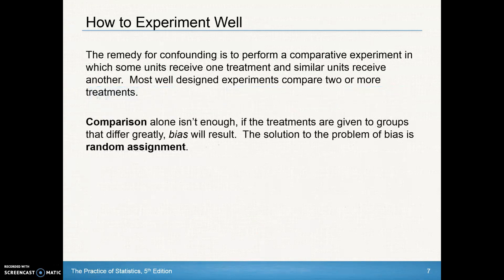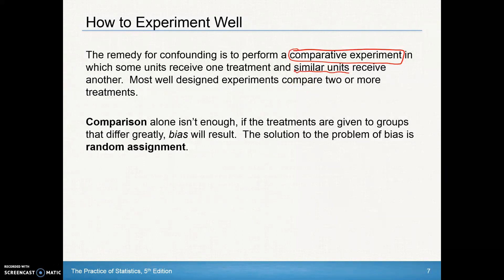The remedy — in other words, how do we experiment well — the remedy for confounding is to perform a comparative experiment, in which some units receive a treatment and similar units, that's the key, receive another treatment. Most well-designed experiments compare two or more treatments.